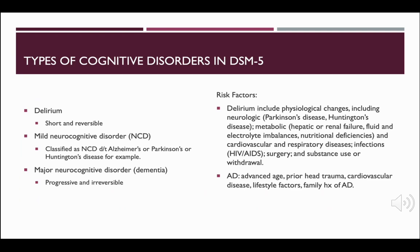These are the types of cognitive disorders found in the DSM-5: delirium, mild neurocognitive disorder (NCD), or major neurocognitive disorder, which is commonly known as dementia. Although delirium tends to be short-term and reversible, mild neurocognitive disorders may progress to a major disorder — major disorders are progressive and irreversible.